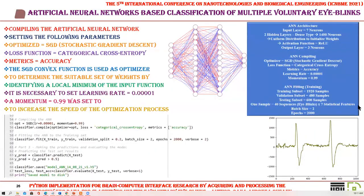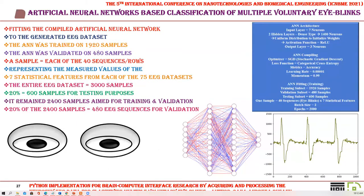Compiling the artificial neural network involved setting the optimizer to SGD (Stochastic Gradient Descent) and the loss function to Categorical Cross-Entropy. The SGD optimizer determines the suitable set of weights by identifying a local minimum. The learning rate was set to 0.00001, and momentum was set to 0.99 to increase the speed of the optimization process. The fitting of the compiled artificial neural network to the generated EEG dataset followed.